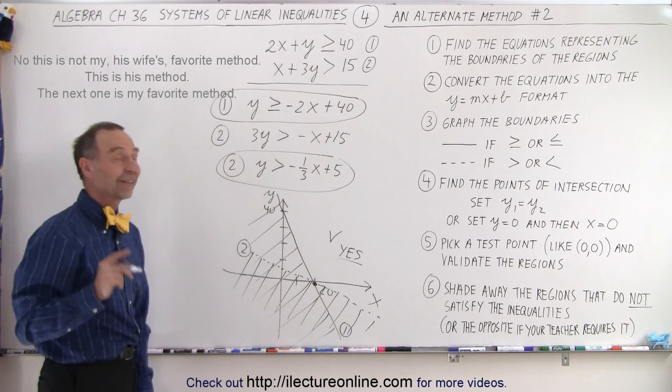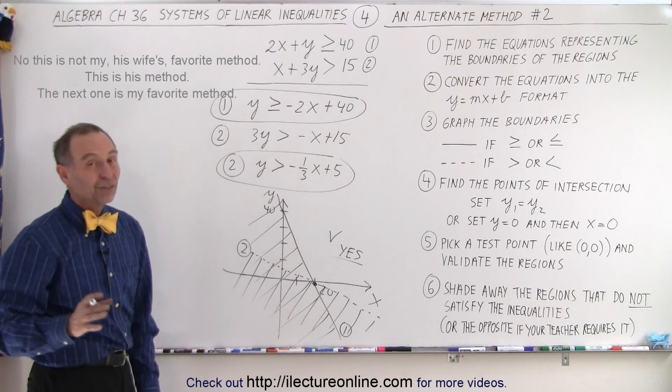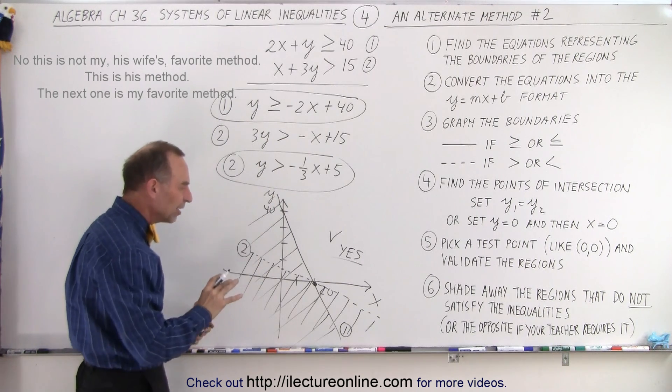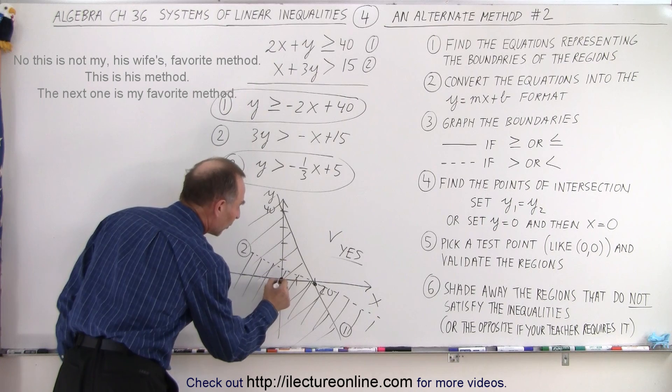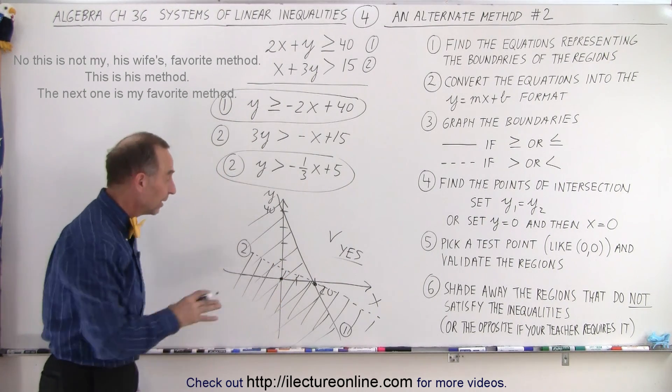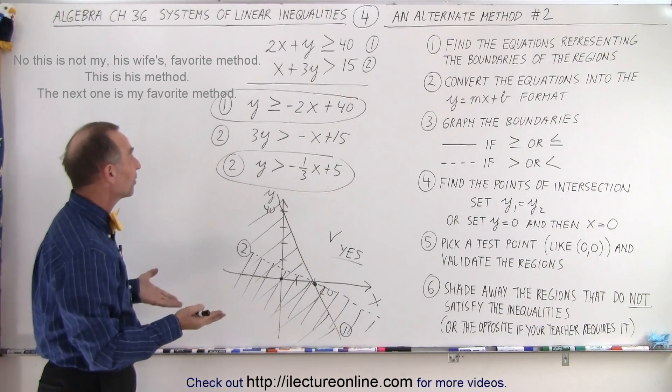That is the region that satisfies both of those inequalities at the same time. Again, it's possible when you have a lot of negative and positive signs in different places that you may not quite get the right result. You can always pick a test point and verify that you did this correctly. But again, this is the way you can do it quickly. And it's most of the time a fail-safe method.